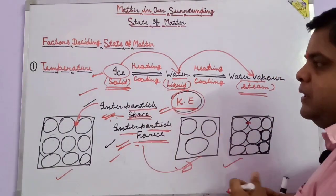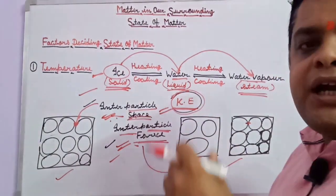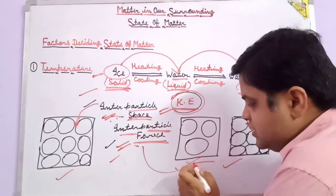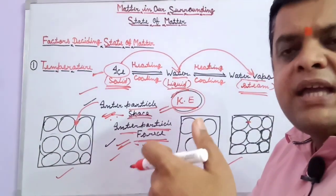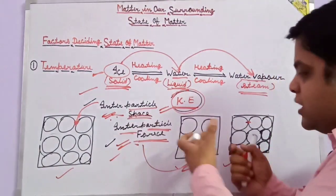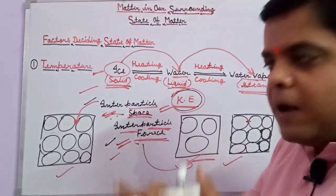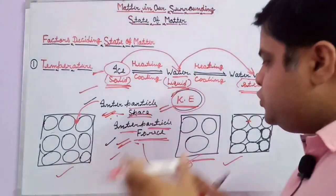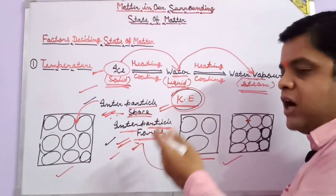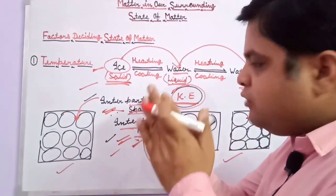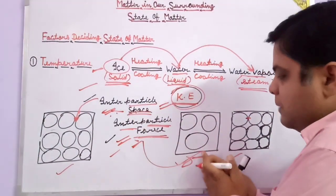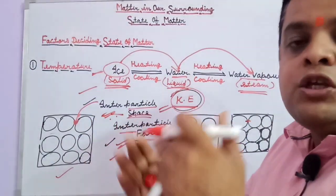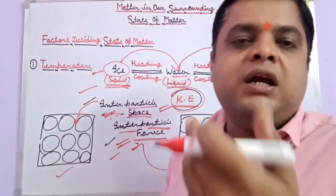A more important phenomenon is diffusion. Gases show diffusion most easily because the inter-particle force in gases is very less and the inter-particle space is very high. So the particles move with much less constraint. In gases, diffusion is most prominent because inter-particle space is very high and inter-particle force is very less.